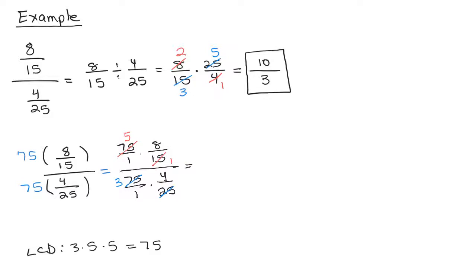So in my numerator, notice I have 5 times 8 which is 40 over 1, and that's simply going to be 40. No more fractions in the numerator. And in the denominator I'm going to have 3 times 4 over 1, so I'm going to have simply 12.